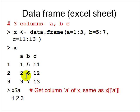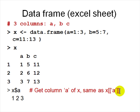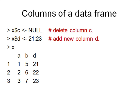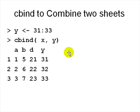To access one column of a data frame, type 'x$a' — you get 1, 2, 3. You can also use 'x[["a"]]' for the same result. To delete a column, assign NULL to it. To add a column, just say 'x$d <- ...' and assign new values. You then get columns a, b, and d.